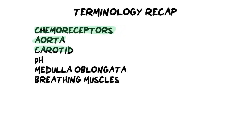The aorta is the largest blood vessel in the body and the carotid artery is the artery in your neck going up to your brain, providing it with fresh oxygenated blood. It's also important to know that the pH of the blood is really important — if the pH of the blood is too acidic or too alkaline it will result in the enzymes denaturing, which we want to avoid. The control center is the medulla oblongata, the region of the brain responsible for maintaining the breathing rate.